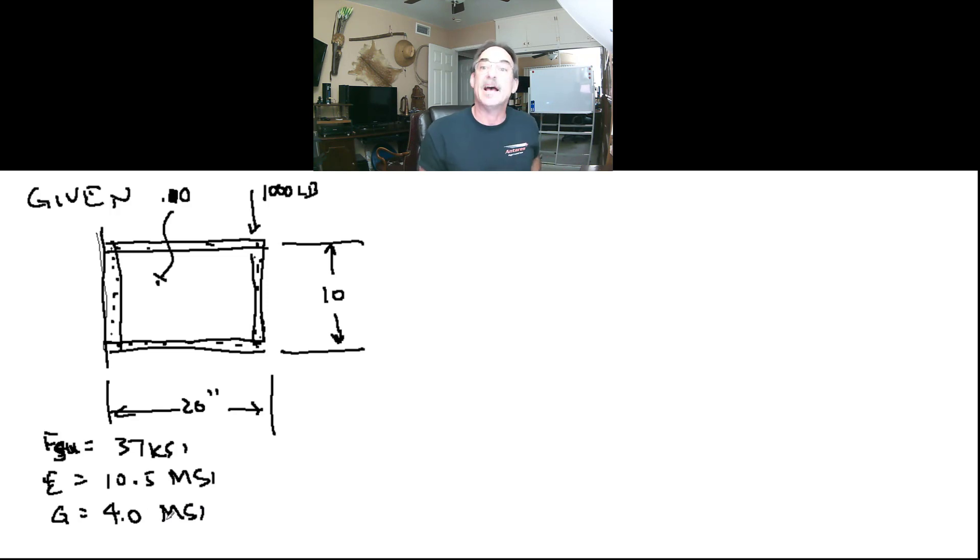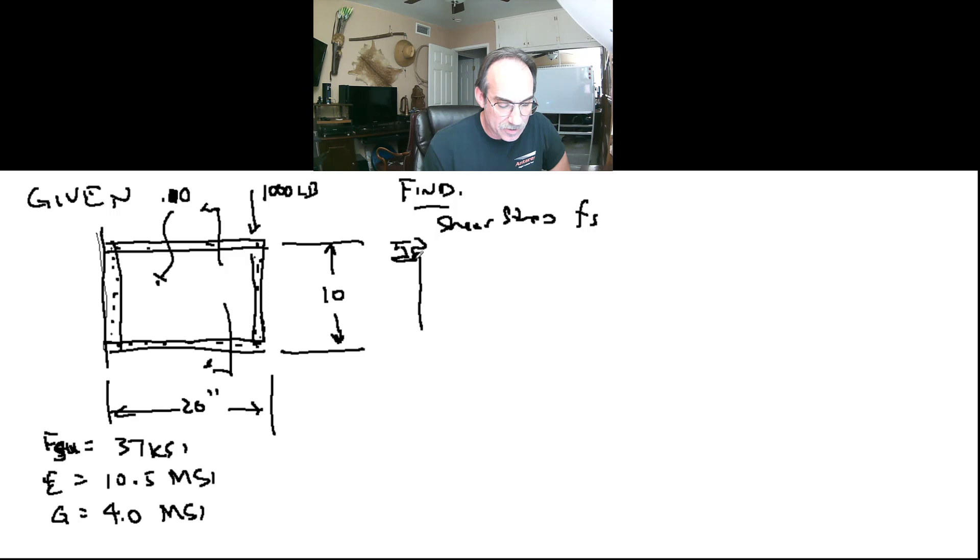We've got our thickness, we've got our dimensions of the beam, we've got our load, and now we're asked a few things. Let's say we're asked to find, first, the shear stress in the beam, Fs. Well, we know that shear stress is just P over A. If we take a cross-section through this beam, the beam will look something like this. But we're actually ignoring the way the cap looks, we're just looking at this web here. The cross-sectional area is actually like a rectangular piece.